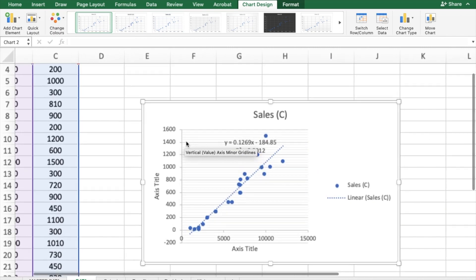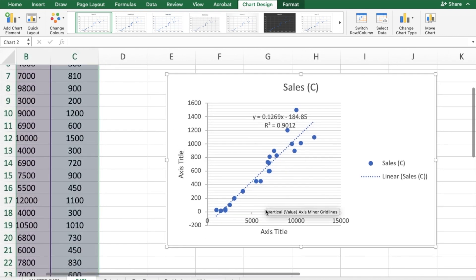So what has Excel done? Excel has generated a trendline over here. And it has also given us the value of the intercept, and also the slope here.